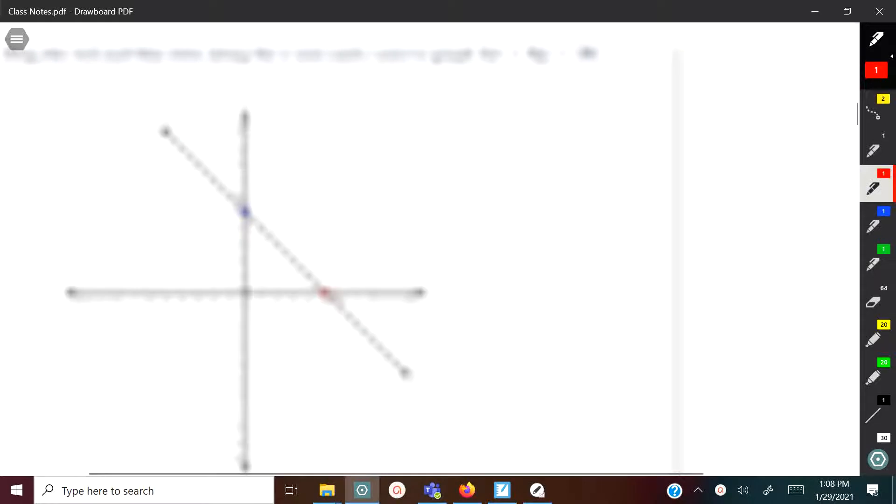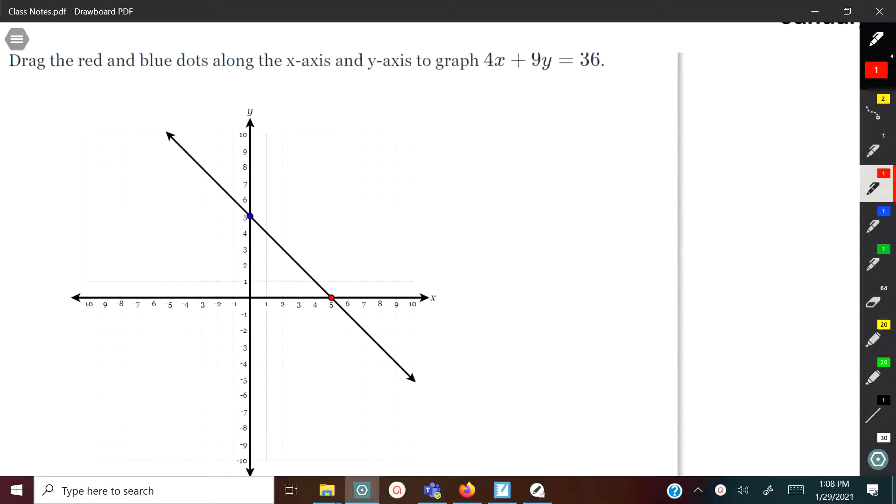It says drag the red and blue dots along the x-axis and the y-axis to graph 4x plus 9y equals 36. Don't pay attention to this line here the way it is now, because you're going to drag these dots to the right intercept and then draw a new line.